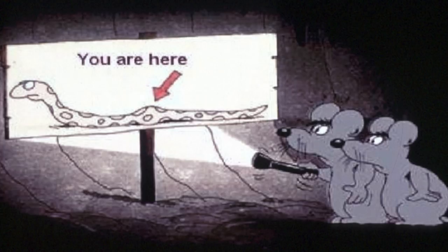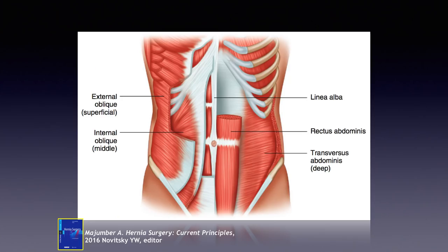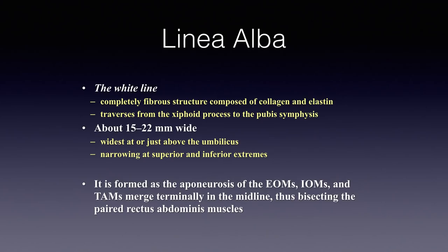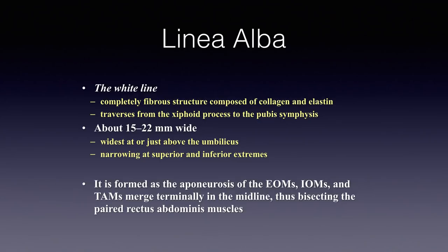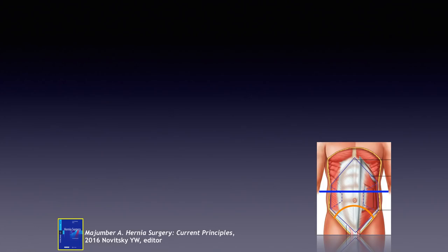Looking at the abdominal wall overview, most people are familiar with the muscle groups that make up the anterior abdominal wall. Laterally, these include the external oblique, the internal oblique, and the transversus abdominis muscle — referred to as the corset of the abdominal wall. In the middle, we have the rectus abdominis muscles connected by the linea alba, which is composed of collagen and elastin. The normal width of the linea alba is about 1.5 to 2.2 centimeters; anything wider is considered a diastatic linea alba.